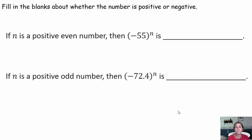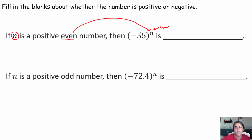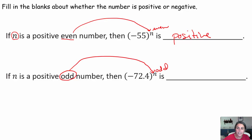Next up, I'd like you to fill in the blanks about whether or not these numbers will be positive or negative. If n is a positive even number, then negative 55 to the nth power is? And then: if n is a positive odd number, then negative 72.4 to the nth power is? Pause the video, fill in those blanks, come on back. As soon as I know my exponent — n happens to be the exponent — my exponent is even: negative base, even exponent, you're guaranteed a positive answer. Negative base, odd exponent — negative 72.4 to an odd exponent — I'm guaranteed my answer will be negative.